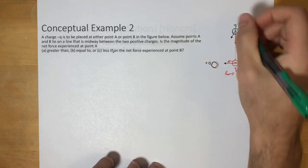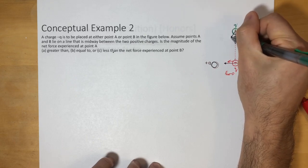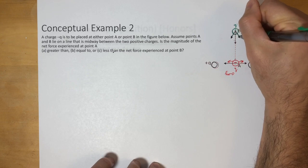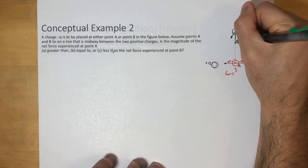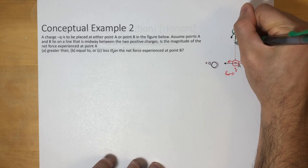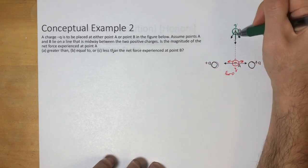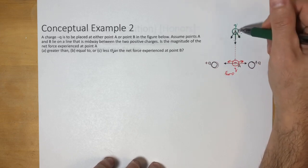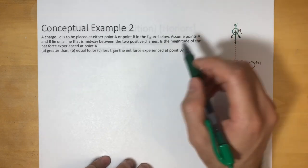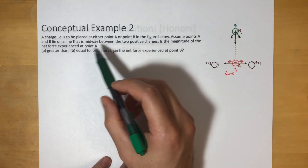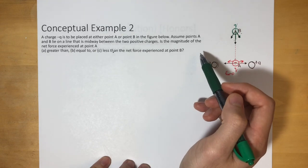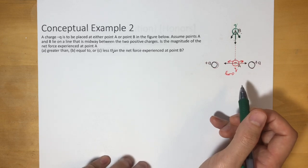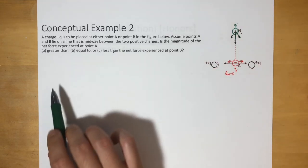For the green one at point B, even though it's further away, it's going to get pulled downward from one charge and pulled this way from the other. The net force is going to be a downward arrow — in the x direction the forces cancel out, but in the y direction there will still be a net force going down. So the magnitude of net force at A is less than at B, since the net force at A would be zero.